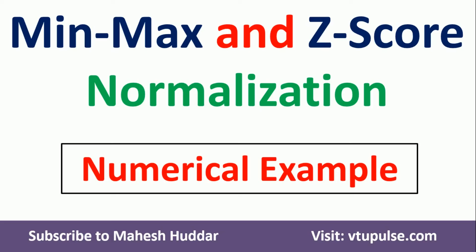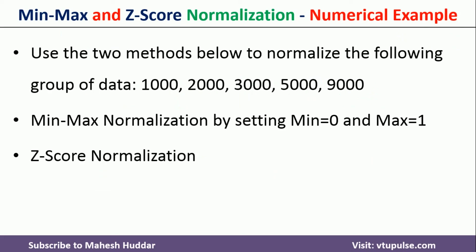Hi, welcome back. In this video I will discuss minmax and z-score normalization with a simple numerical example. Here we have been given five data points: 1000, 2000, 3000, 5000, and 9000. I want to convert this data using minmax as well as z-score normalization.